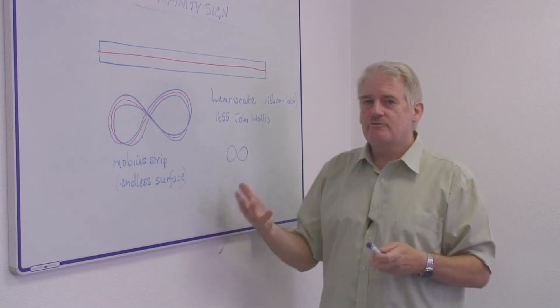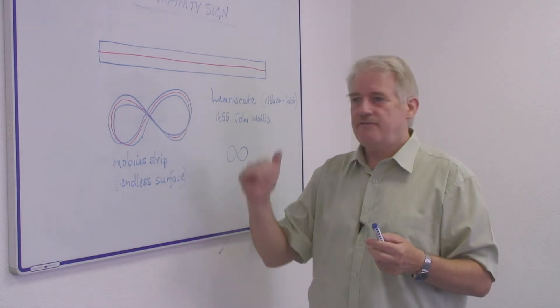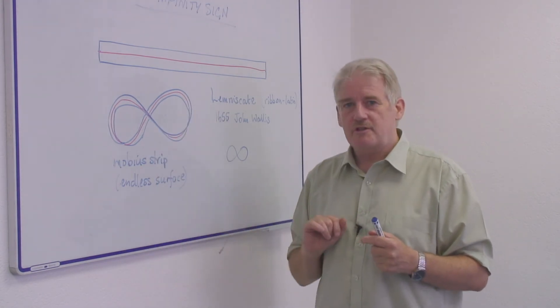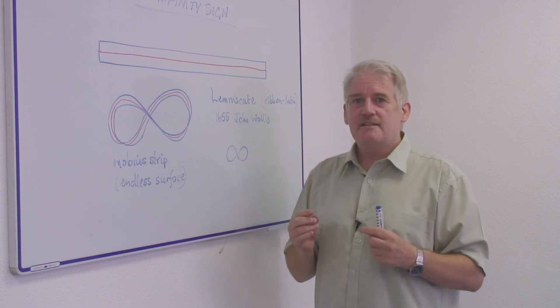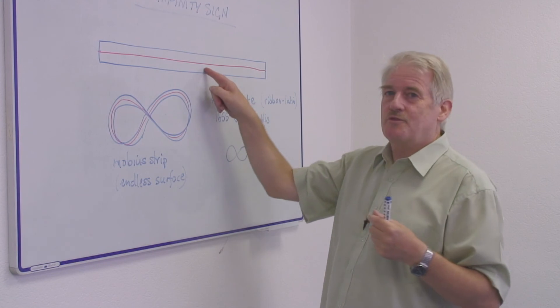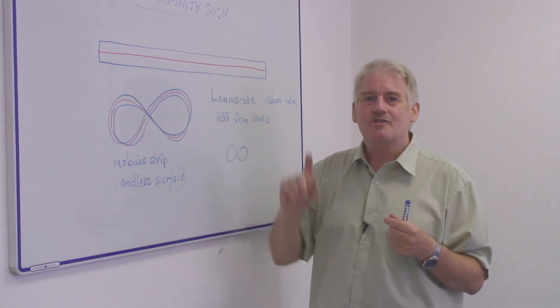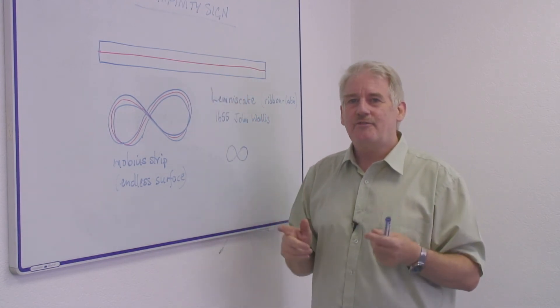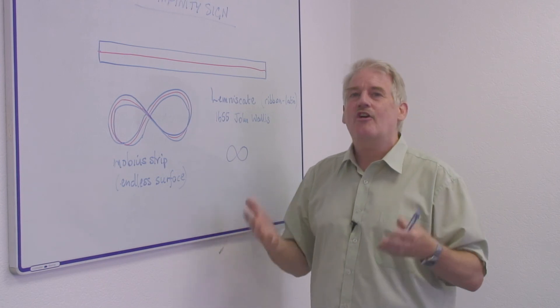And so this was a representation of infinity, a Mobius strip it's called. And it means it's a piece of paper which has two surfaces of course, but actually only has one surface, and therefore it has an infinitely long surface.